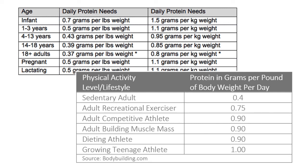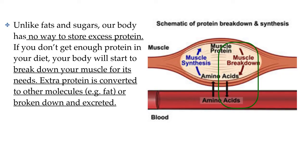Unlike fats, which can be stored in fat cells for years, and carbs, which can be stored as glycogen for hours, our bodies have no protein storage capability. If you eat too much protein one day, your body will simply convert the extra amino acids into fat or get rid of them in your urine — you won't store the extra amino acids for another day. If you stop consuming enough protein, your body will start to break down the protein in your muscles to get the amino acids it needs to build the molecules that keep you alive.